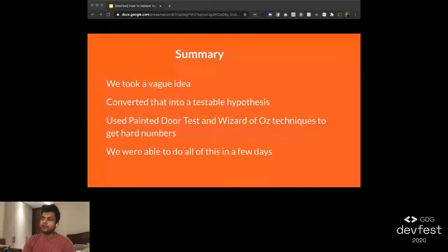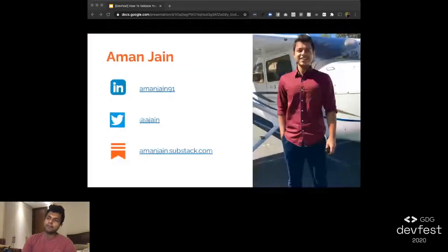So to summarize, we took a very vague idea, converted that into a testable hypothesis, and then we used the painted door test and the Wizard of Oz techniques to get hard numbers. And we were able to do all of this in a few days. Thanks a lot for listening. My name is Aman Jain again, and feel free to connect with me on LinkedIn, Twitter, or Substack to continue the conversation.